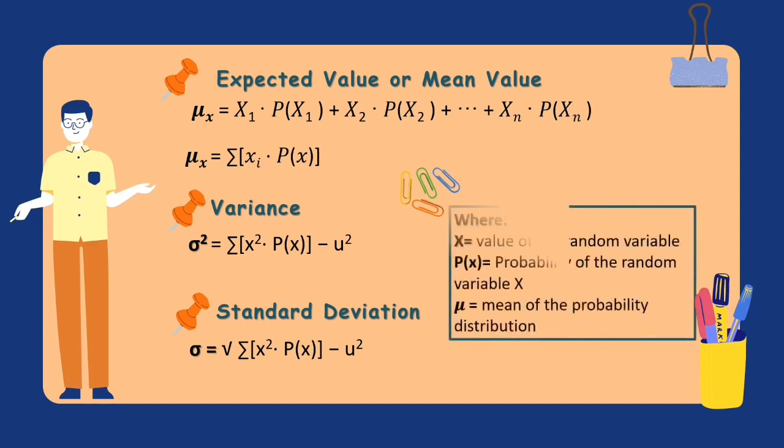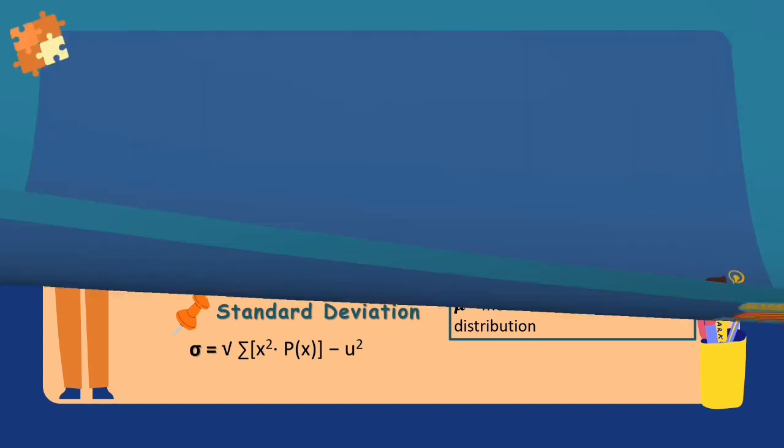In these formulas, x is the value of the random variable, P(x) refers to the probability of the random variable, and mu is the symbol for the mean of the probability distribution. Remember these formulas so that you will not be confused when we start solving problems.